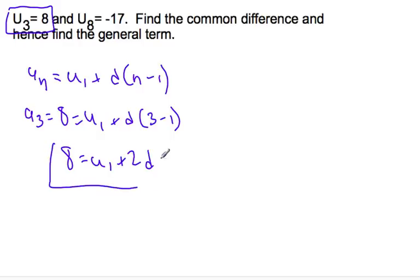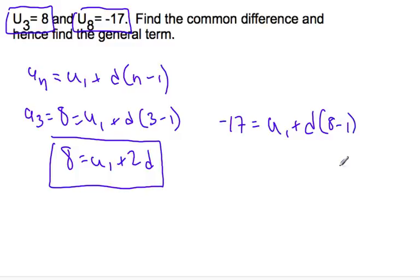If that's the case, I need to find a second equation. Well, conveniently, I have another variable here I can use. So I could say that u8, which is negative 17, is equal to u1, which I don't know, plus my difference, I don't know either, but it's n minus 1. And n is 8, so it's 8 minus 1, which, tidying it up again, I get negative 17 is equal to u1 plus 7d.